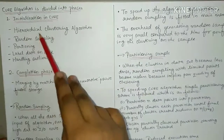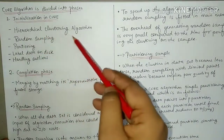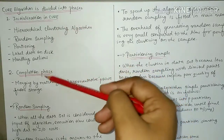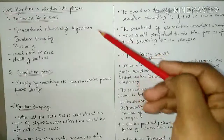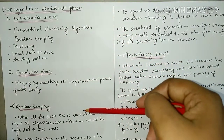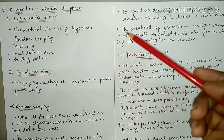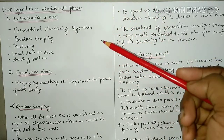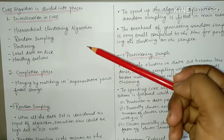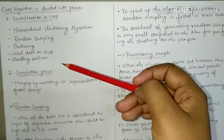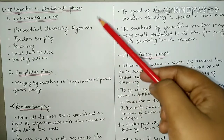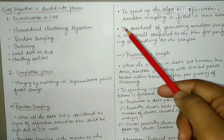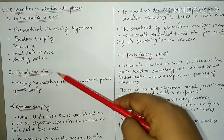Similarly, the next step would be the Hierarchical Clustering algorithm. So first you take a random sample, then you partition it. Partition करने के बाद, आप hierarchical clustering algorithm लगाते हैं — after partitioning, you apply the hierarchical clustering algorithm, which merges smaller points into larger clusters by joining them together.